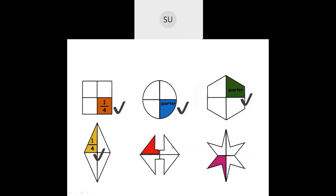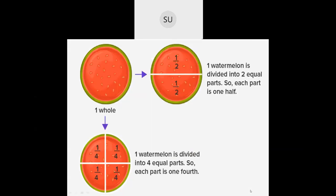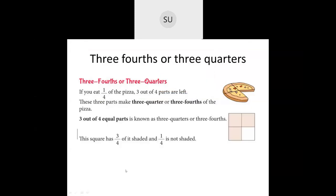These are all shapes divided into four equal parts. A whole is represented as one. Half is shown as one by two. These show four equal quarters — if I take one it will be one by four or one-fourth. One whole watermelon divided into half looks like one by two, and if divided into four equal parts each piece is one-fourth or one quarter.